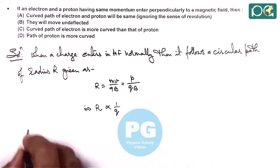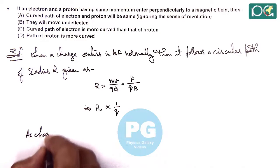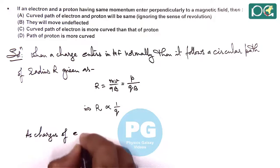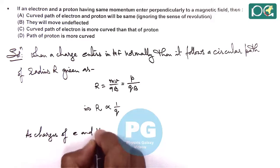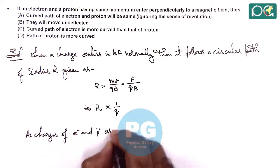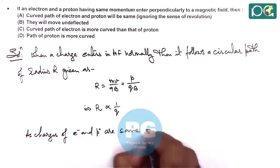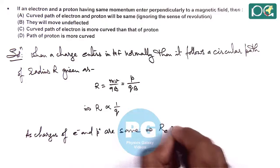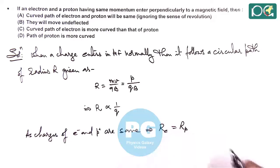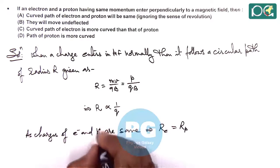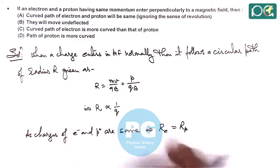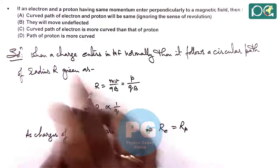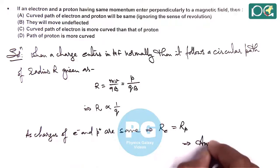So here we can write: charges of electron and proton are same in magnitude. This implies the radius of electron is equal to radius of proton. Now the only difference is due to the opposite charges, their curve will be in opposite sense, but their curvature will be same. So here we can write the answer to this question is option A.